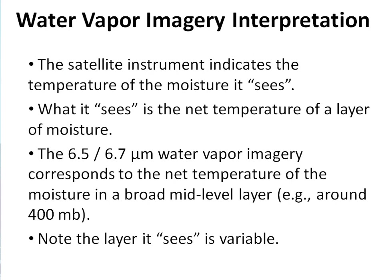Let's first review some basic water vapor imagery interpretation. Remember that the satellite instrument indicates the temperature of the moisture that it sees — the net temperature of a layer of moisture. The water vapor imagery corresponds to the net temperature of the moisture in a broad mid-level layer, usually centered around 400 millibars for the 6.5 or 6.7 standard water vapor channel. Note that the layer it sees is variable.